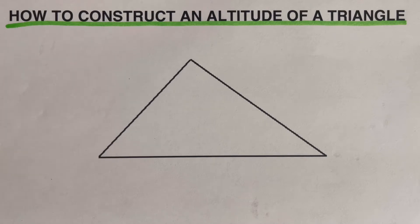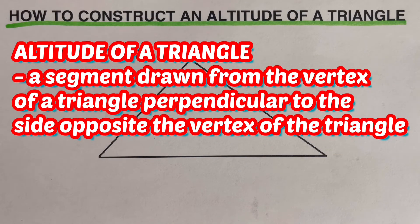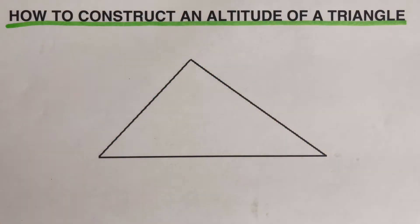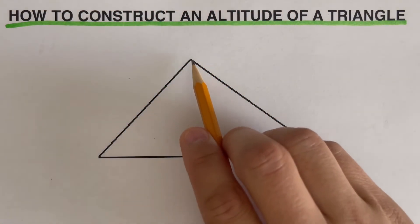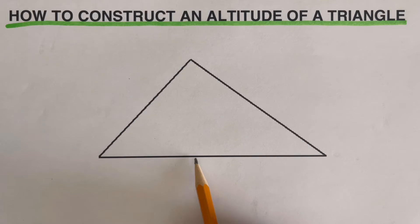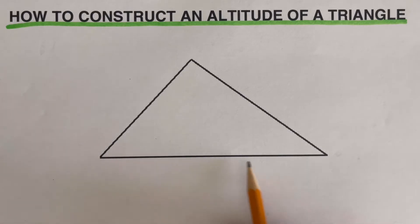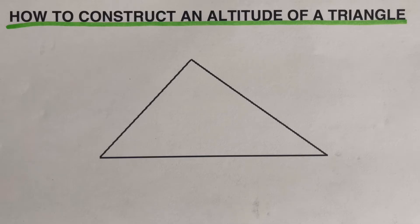Before we go over the steps on how to construct an altitude, let's review the definition. The altitude of a triangle is a segment drawn from the vertex of a triangle perpendicular to the opposite side. So we can draw a line from this vertex going to the opposite side, making sure that line forms a 90-degree angle with that side.